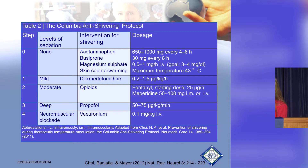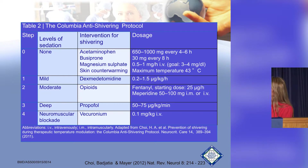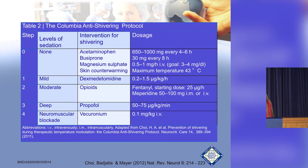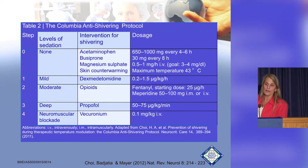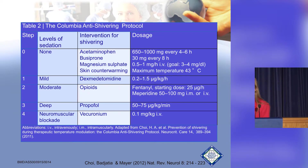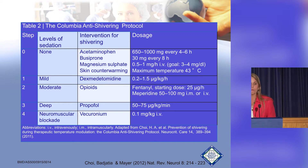Here's a shivering treatment protocol from Columbia. When there's no shivering, they start with acetaminophen, buspirone, magnesium, and skin counterwarming. Then they add dexmedetomidine, then opiates, and as severity increases they add propofol, and finally a paralytic in severe cases. It's a tiered approach — use the least invasive and least complex pharmacologic agents first if you can get shivering under control.